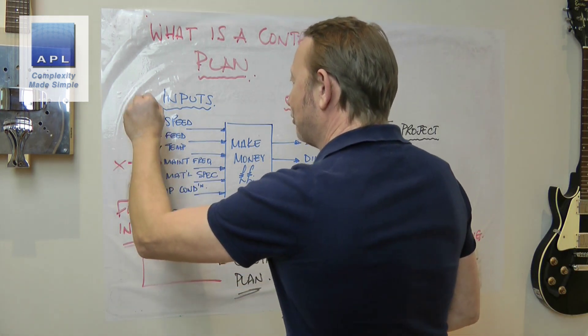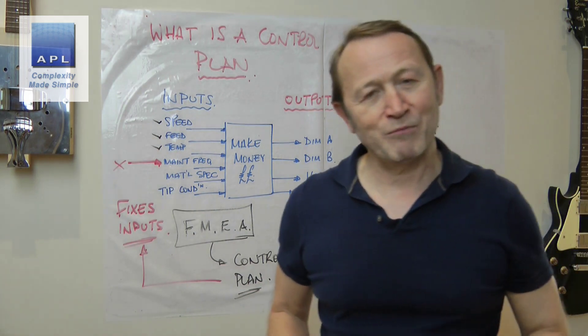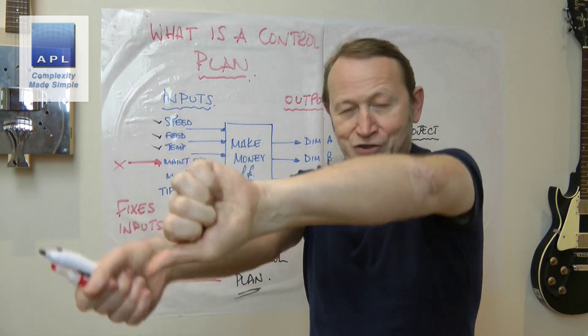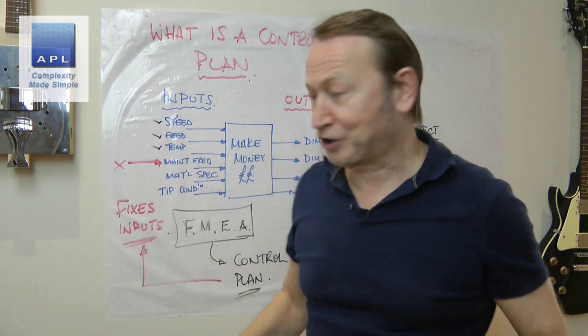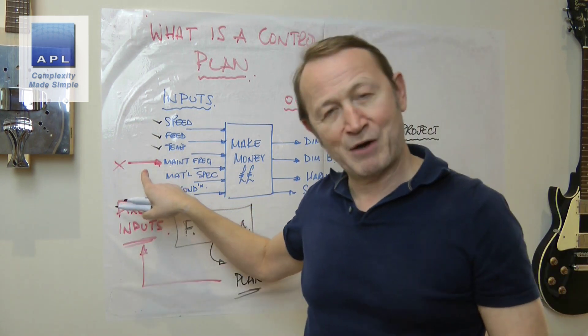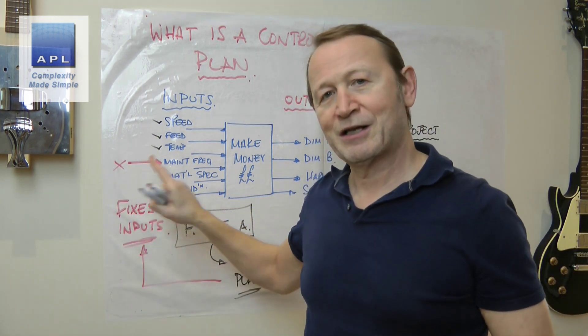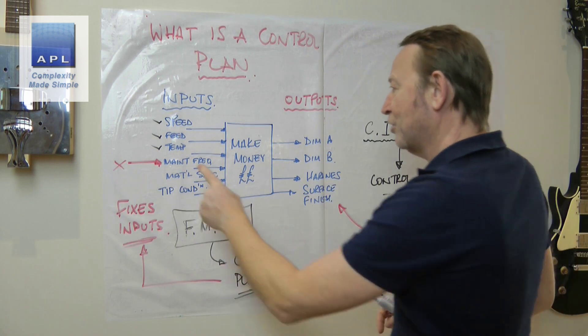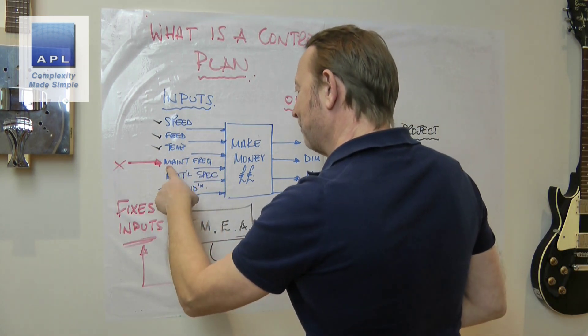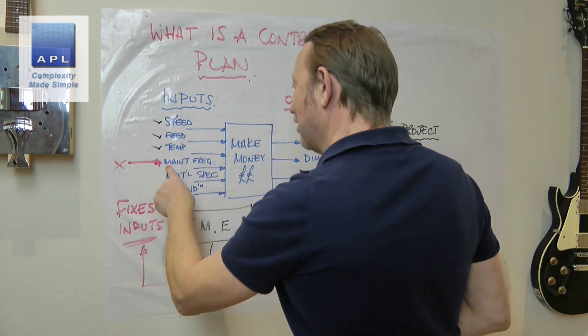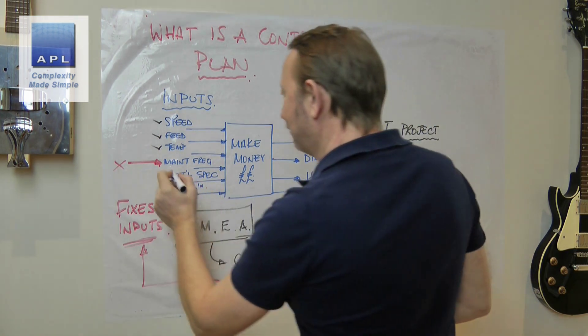What should I be doing? A control plan fixes inputs. And I really do mean fix them. So your settings on your machine - speed, feed, temperature - they're easy to fix, they're just dials.